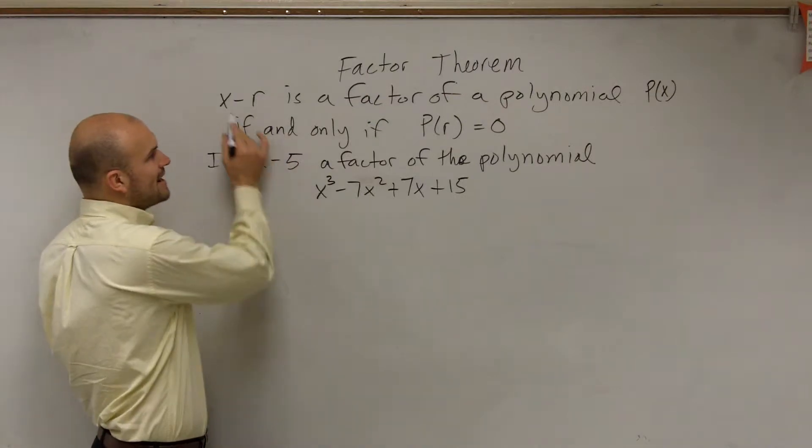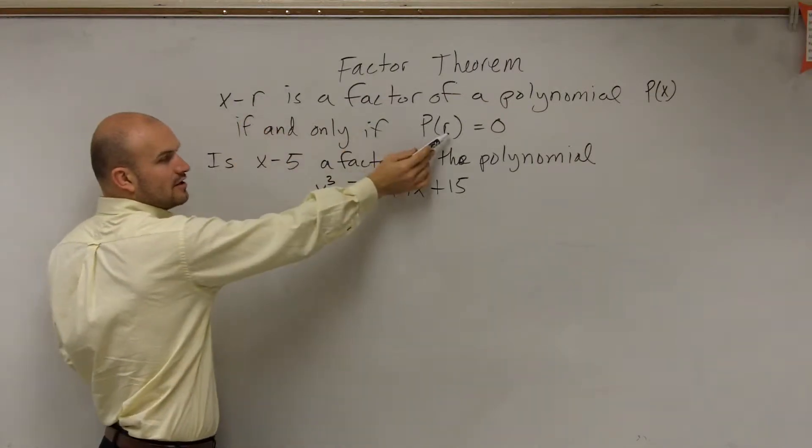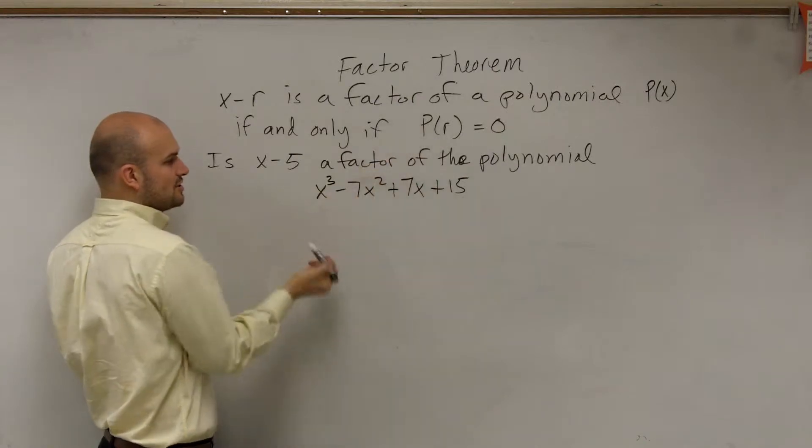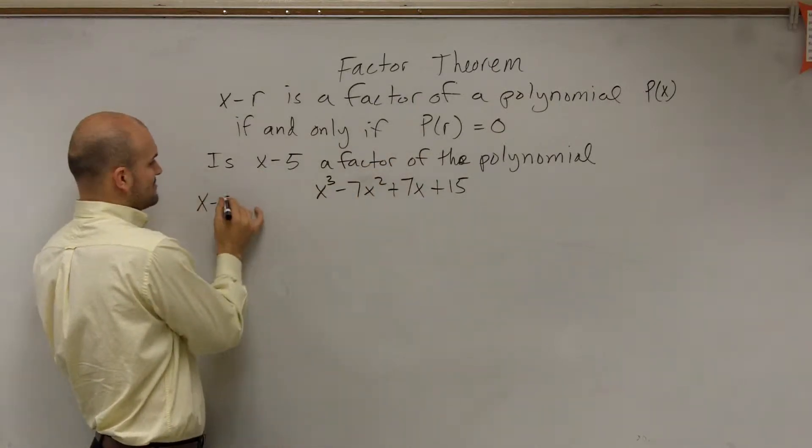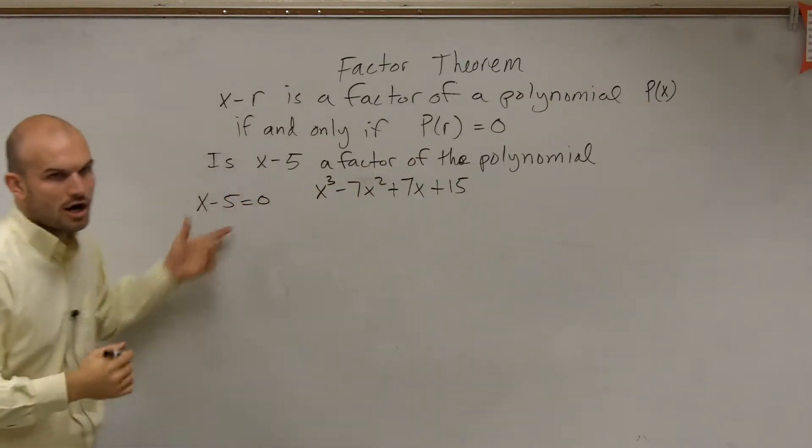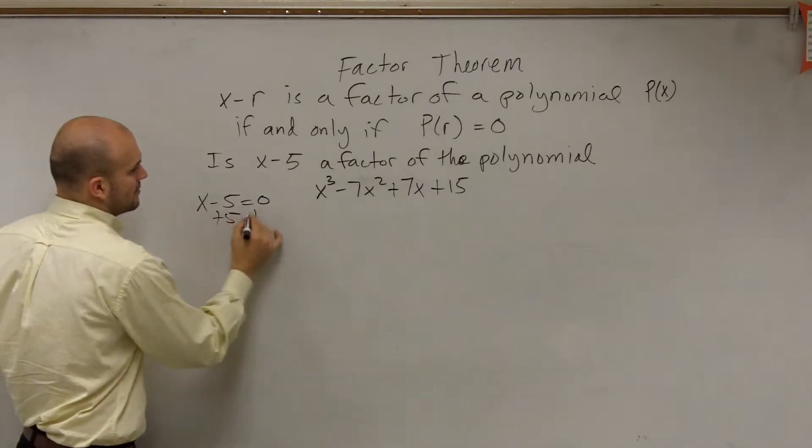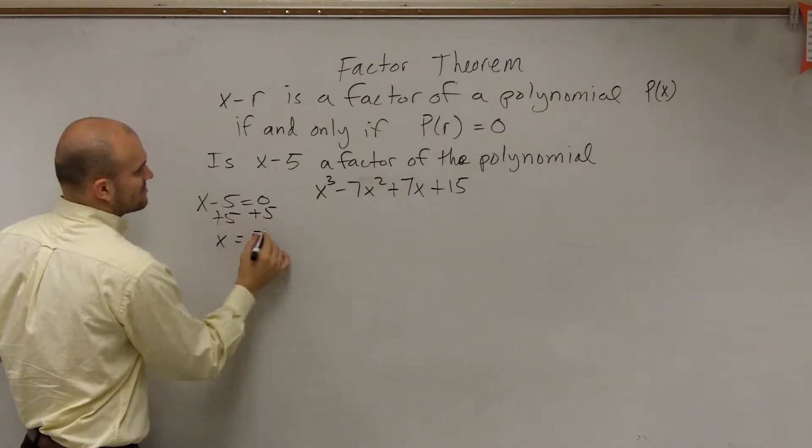Now remember, x minus r is a factor only if r, when you plug in r, gives you 0. So therefore, we can say x minus 5. What's going to be our r? We solve x minus 5 equals 0, so we get x equals 5.